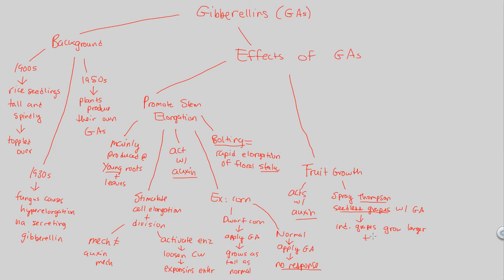Not only do the grapes grow larger, but the internodes elongate as well. Because there's always an internode between individual grapes, when those internodes elongate, it allows for more space. If you have more space between each individual grape, you get individual grapes growing even larger. That's a nice commercial application of GAs in terms of fruit growth. This is illustrated in figure 39.9.